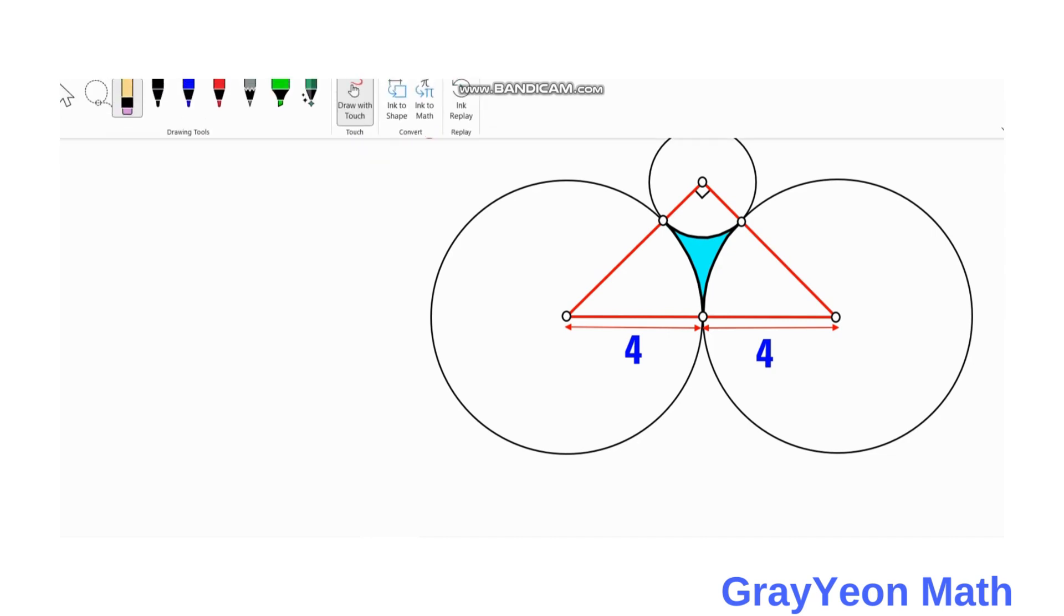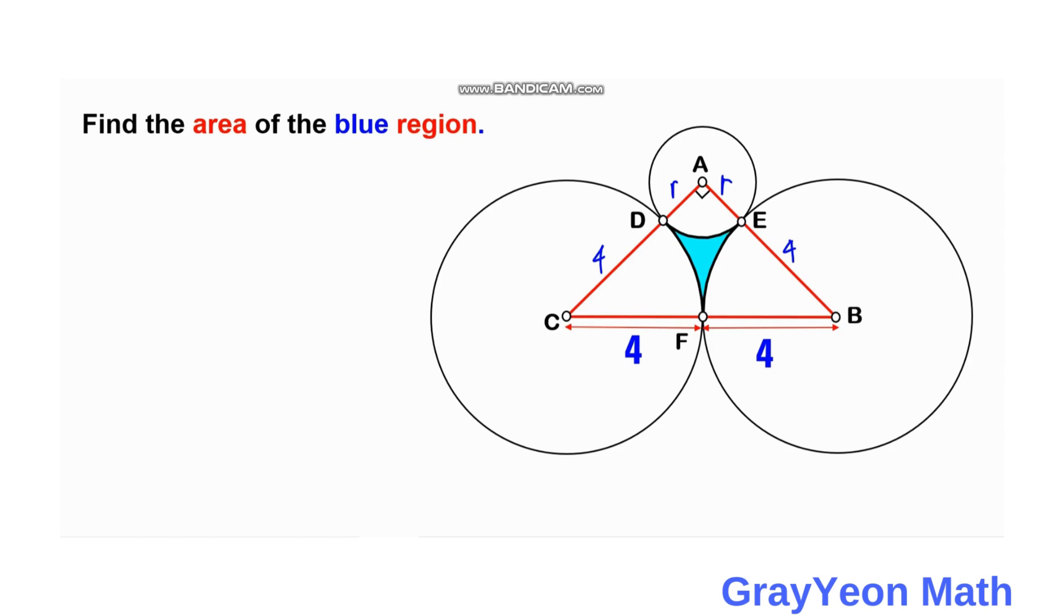First thing that we can do is label the radius of this smaller circle as r. The radius is always 4, so this distance and also this distance are always 4.